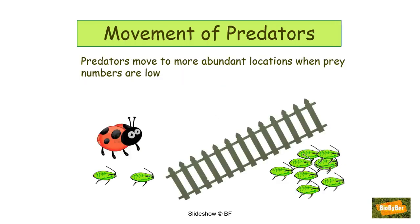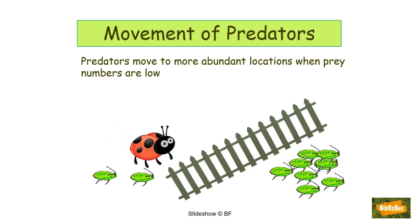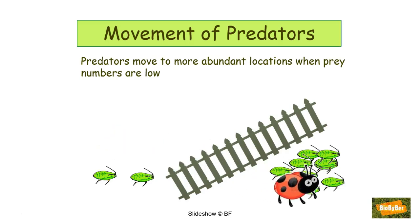Movement of predators is the third factor. If the number of prey is so small that the predator cannot catch enough food to survive, the predators might move to a location where prey is more abundant. This allows the prey in the old location to increase. It is the balance between all these factors that results in the repeated cycle of change in predator and prey numbers.